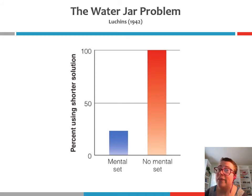What he found—the result was that only 23% of the participants in the mental set group used the simpler solution, whereas all of the participants in the no mental set group used the simpler solution. So again, what this illustrates is that prior experience, or having used a solution to a particular problem in the past, can make us less able to find and utilize simpler solutions in the future.